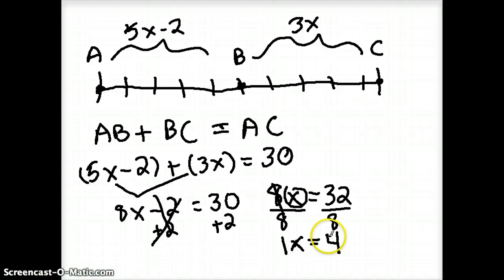Okay, so for every x I know that it equals 4 units. So now in order to actually talk about this distance here from A all the way over to B, I need to substitute. So instead of x, instead of 5 times the number, I'm going to actually use the number I just found. So 5 times 4 minus 2.